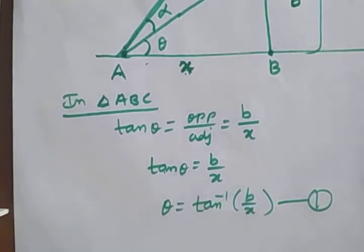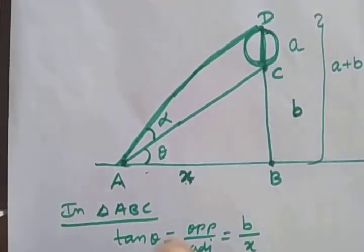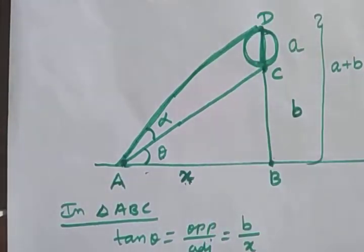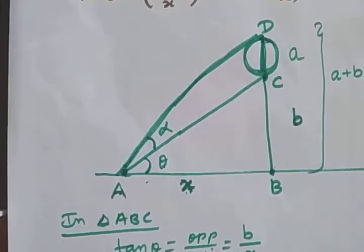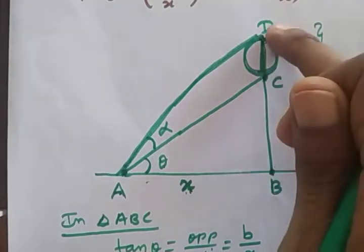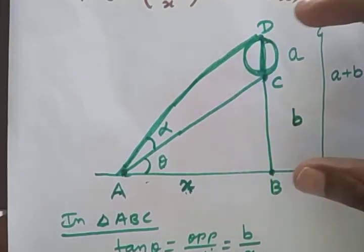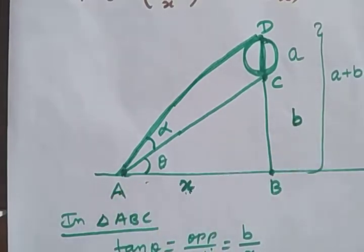For the big triangle, considering from the viewer's eye to the top of the signal, the opposite side is a + b (full height) and the adjacent side is x. So tan(θ + α) = (a + b)/x.